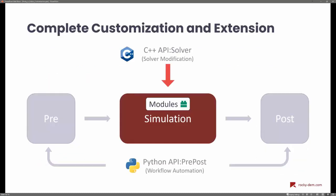Looking at the complete simulation workflow, we have preprocessing on the left side where we set up the definition, parameters, and type of models to be used, then simulation where the calculation is done, and then post-processing where you analyze the results. The API pre-post is written in Python and allows you to interact with preprocessing and post-processing. The API Solver is written in C++ and gives you access to detailed data and the types of models implemented in Rocky, so you can modify or create new models to be executed at runtime during simulation calculations.